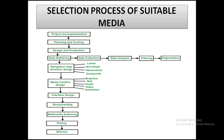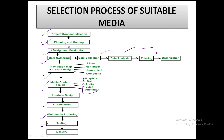The selection process involves several steps: first, conceptualize the project; plan its cost; design it; gather and collect data; analyze and organize it; then do navigation and map structure designing; get media content designed; do story building, multimedia authoring, testing, and delivery. We can use graphics, text, and other elements. Before using multimedia in any education system or planning courses, we must go through these steps to create a suitable media for learning.